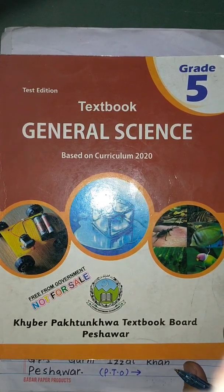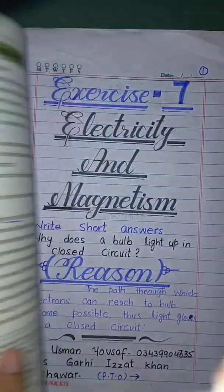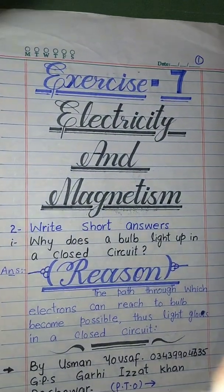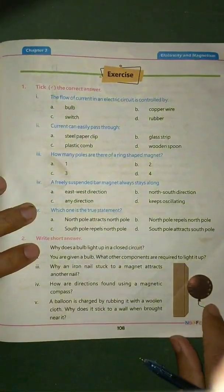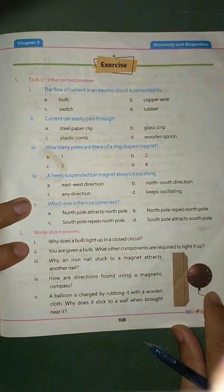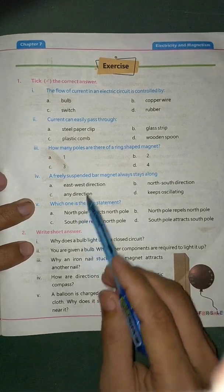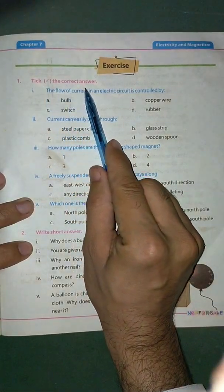Bismillahirrahmanirrahim. General Science, Grade 5, Chapter number 7, Exercise. Exercise first — choose the correct answer.